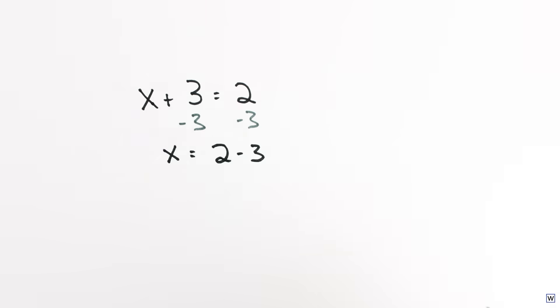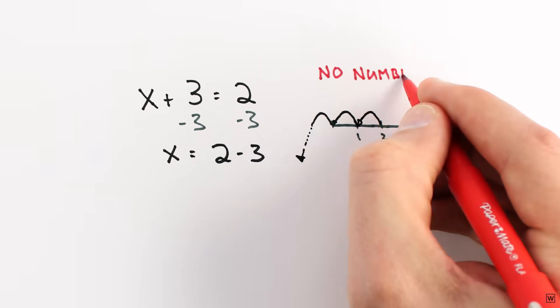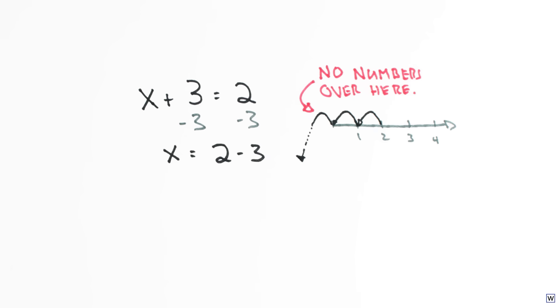Without negatives, simple algebra problems like x plus 3 equals 2 have no answer. Before negatives were accepted, this problem would have had no solution, just like we thought our original problem had no solution. The thing is, it's not crazy or weird to think these problems have no solutions.